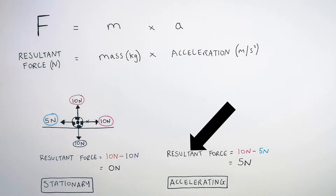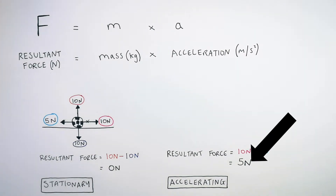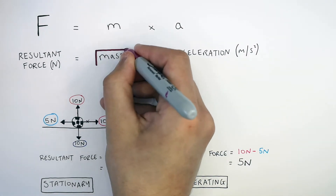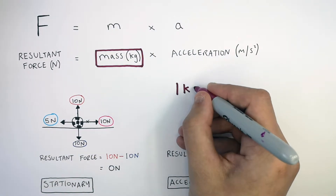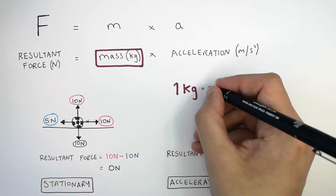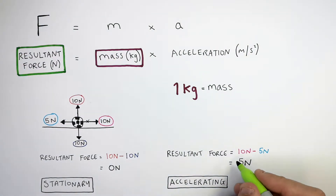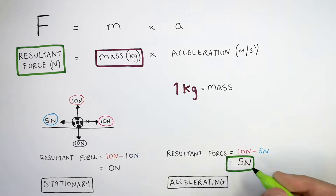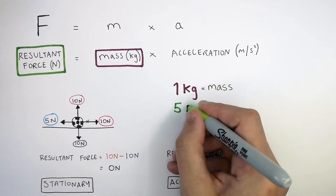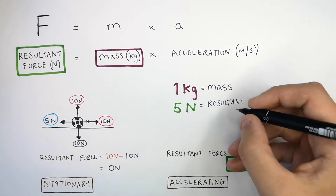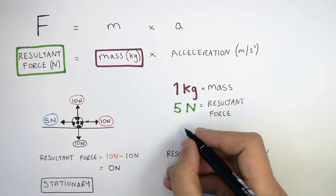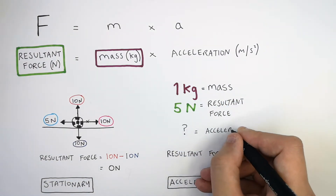We've now figured out the resultant force acting on the ball, which is 5 newtons going forwards. To work out the acceleration, we need the mass. The mass of the ball is 1 kilogram and we know the resultant force is 5 newtons. We now have enough information to work out the acceleration of the ball.